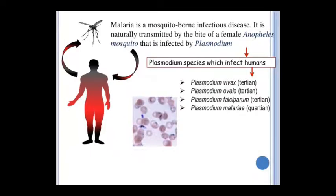Malaria is a mosquito-borne infection caused by a female Anopheles mosquito infected with Plasmodium. Humans have 4 species of malaria: Plasmodium vivax, ovale, falciparum, and malariae. The other three are tertian and malariae is quartan.